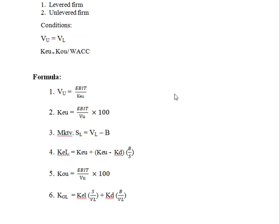We have a formula for the value of the firm: EBIT divided by KEU. So KEU is EBIT divided by the value of the unlimited firm, expressed as a percentage. KEU is the cost of equity of the unlevered firm.